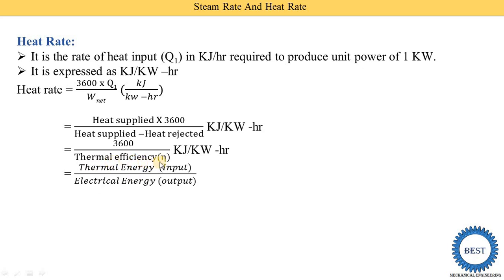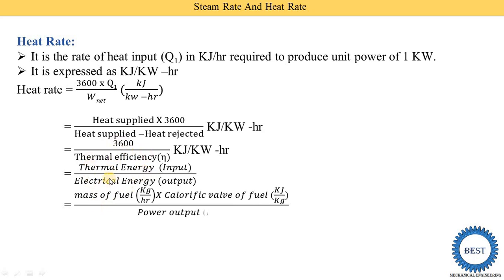Thermal efficiency is equal to output divided by input — electrical energy produced is the output and thermal energy is the input. Thermal energy is produced by burning fuel — that is, burning some mass of fuel in kilogram per hour. For example, if we burn 500 kg of fuel in one hour, and the calorific value is 40,000 kilojoule per kg, then by burning 1 kg of fuel we can produce 40,000 kilojoule of energy — this is called the calorific value.